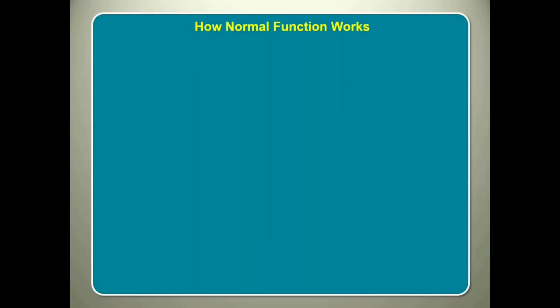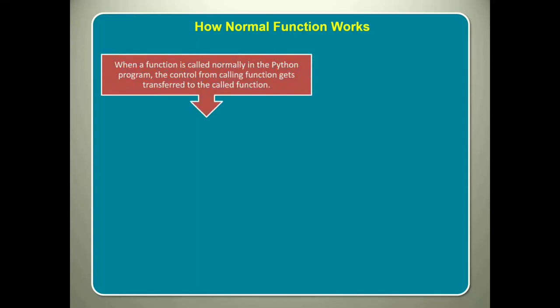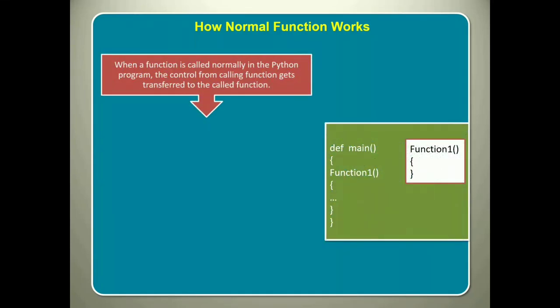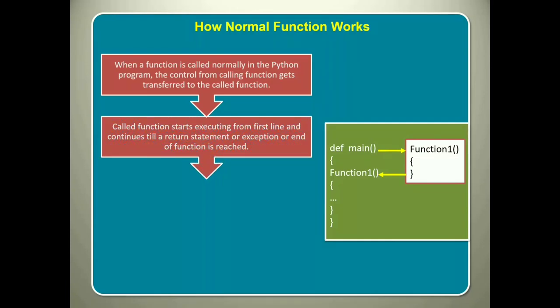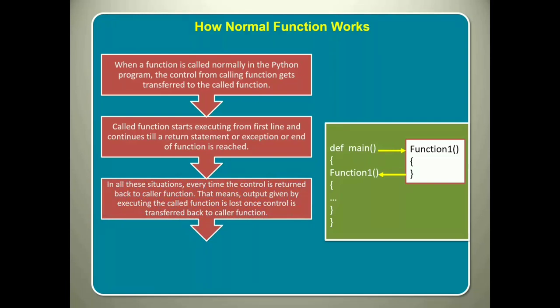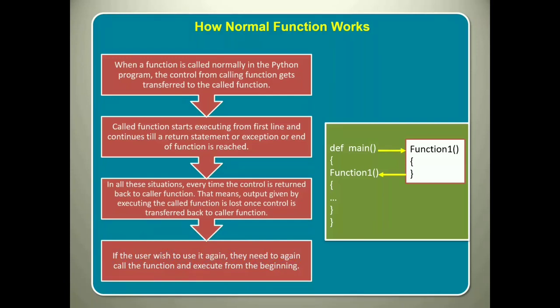Before that, let's understand how normal function works. When you normally call a function in your Python program, the control from calling function gets transferred to the called function. Called function starts executing from first line and continues till a return statement or exception or end of function is reached. In all these situations, every time the control is returned back to caller function, that means output given by executing the called function is lost once control is transferred back to caller function. If you wish to use it again, you need to again call the function and execute from the beginning.